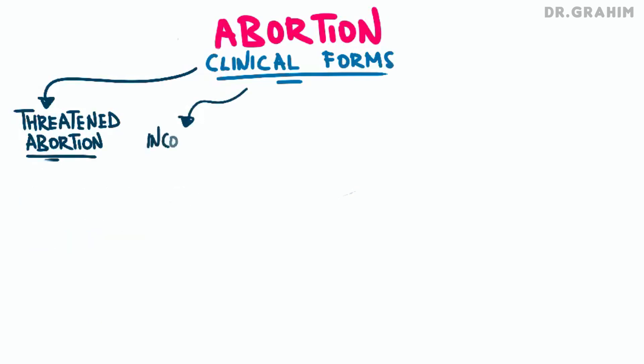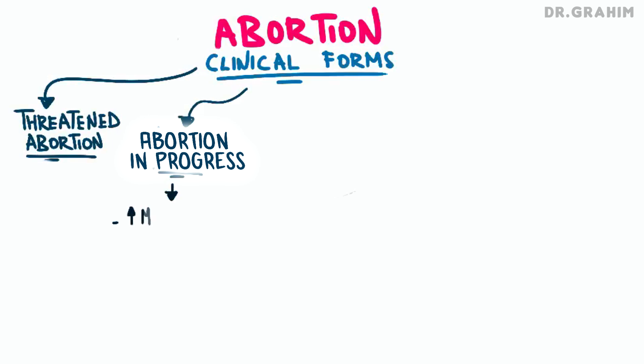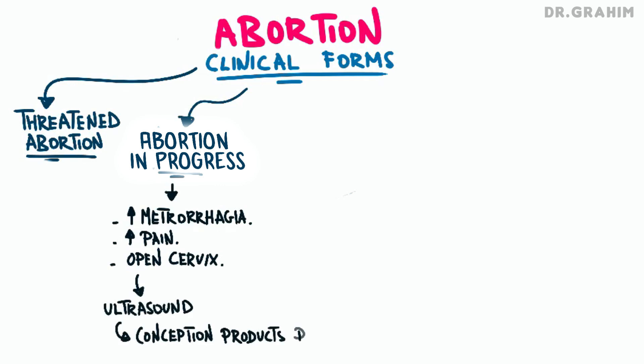The second form is abortion in progress, indicating that the miscarriage process is already underway and the conception product is in the process of being expelled. The patient may present with increasing metrorrhagia, which becomes more abundant. Pelvic pain is usually intense and explosive. On clinical examination, the cervix is open, meaning it is dilated and shortened in preparation for the expulsion of the conception product. Sometimes conception products — meaning placenta or embryonic tissue — may be found in the vagina. Pelvic ultrasound shows that the conception product is being expelled, meaning it is already partially or completely expelled from the uterus.